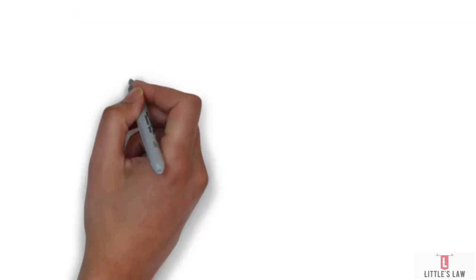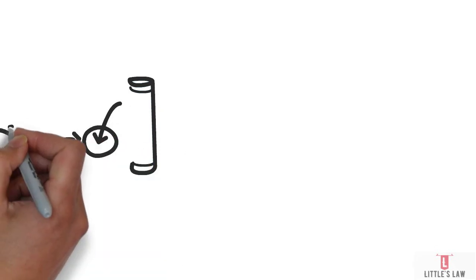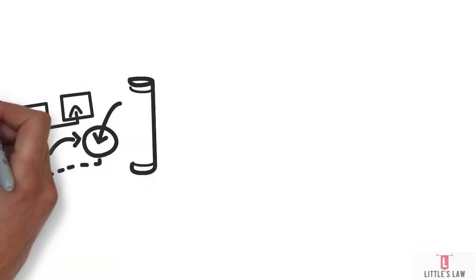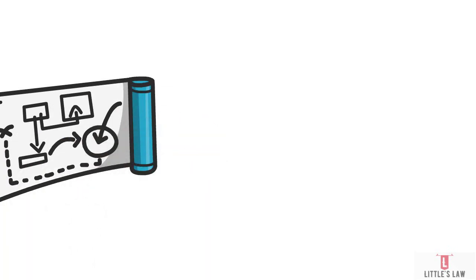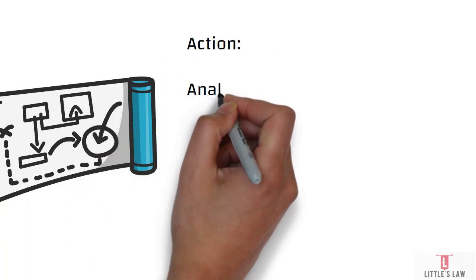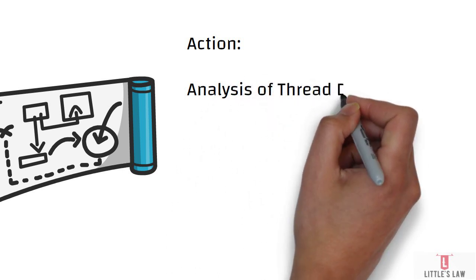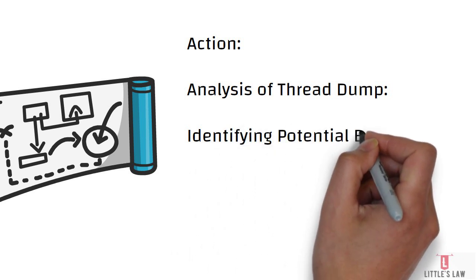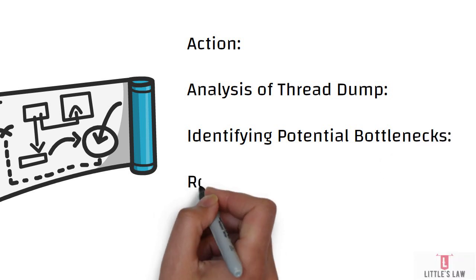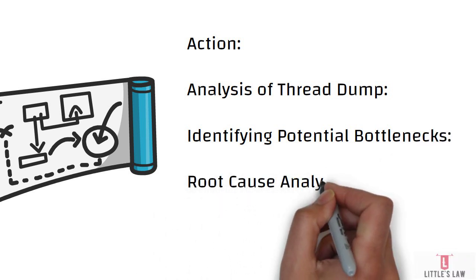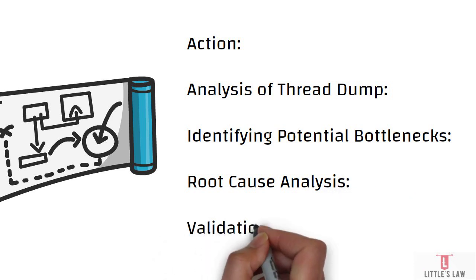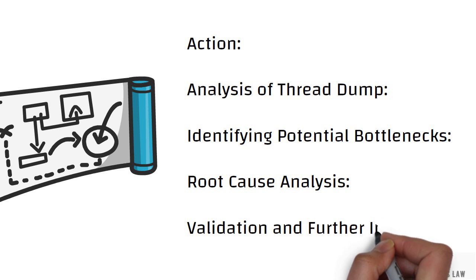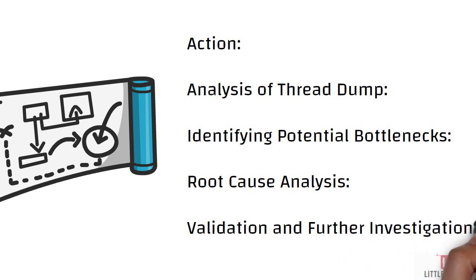Now for the actions. You have your thread dump in hand. The first part is the analysis of the thread dump — you should start by thoroughly examining it. This involves identifying the states of each thread. Normally threads exist in three different states: running, waiting, and blocked. You need to identify the states of all threads and understand their call stacks to discern what each thread is currently doing.